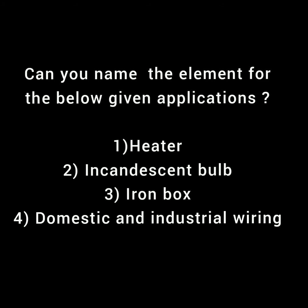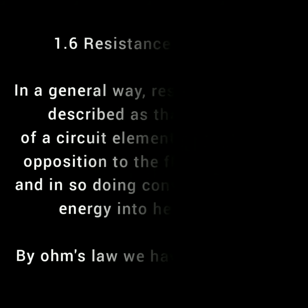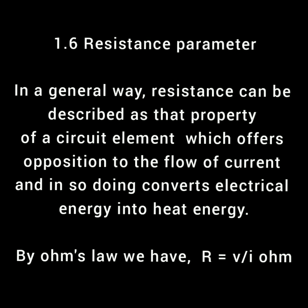Let's start with the applications. Can you name the element for the below given applications? First one is heater, second is incandescent bulb, third is iron box, fourth is domestic and industrial wiring. The answer is resistance. In a general way, resistance can be described as that property of a circuit element which offers opposition to the flow of current, and in so doing converts electrical energy into heat energy.